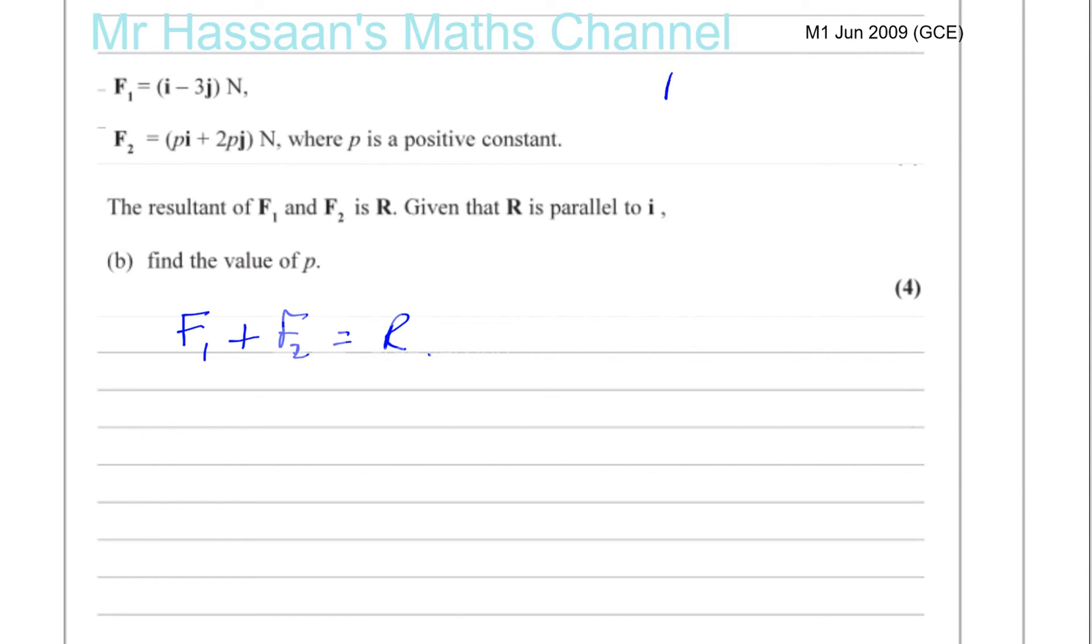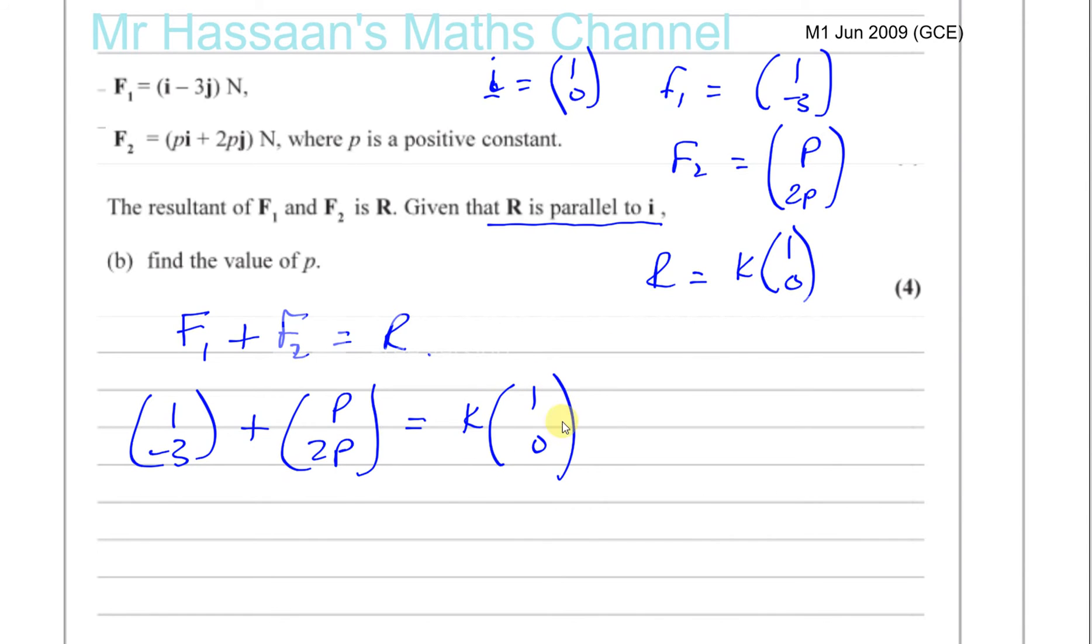Now, F1 is I minus 3J, so F1 is 1 and minus 3. And F2 is PI plus 2PJ, so it's P and 2P. So I can say that F1, 1 minus 3, plus P and 2P is equal to R. Now, they've told us R is parallel to I. So R is going to be some constant times the vector I. The vector I is 1, 0. It's a unit vector horizontally. So it's going to be K times 1, 0. So that's going to be some constant times 1, 0. It doesn't say it's equal to I. It says it's parallel to I. So it's some scalar times I.